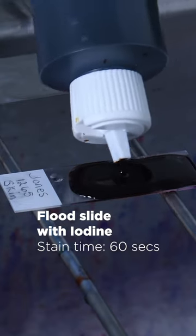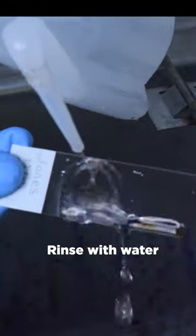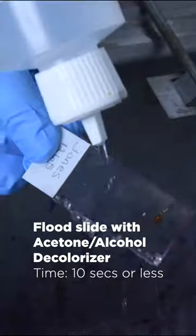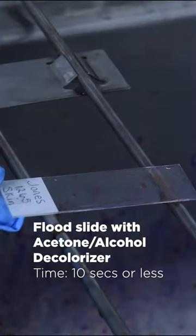Flood slide with iodine. Gently rinse the slide with water and allow to drain. Tilt the slide and flood with a few drops of decolorizer until no violet color runs off.